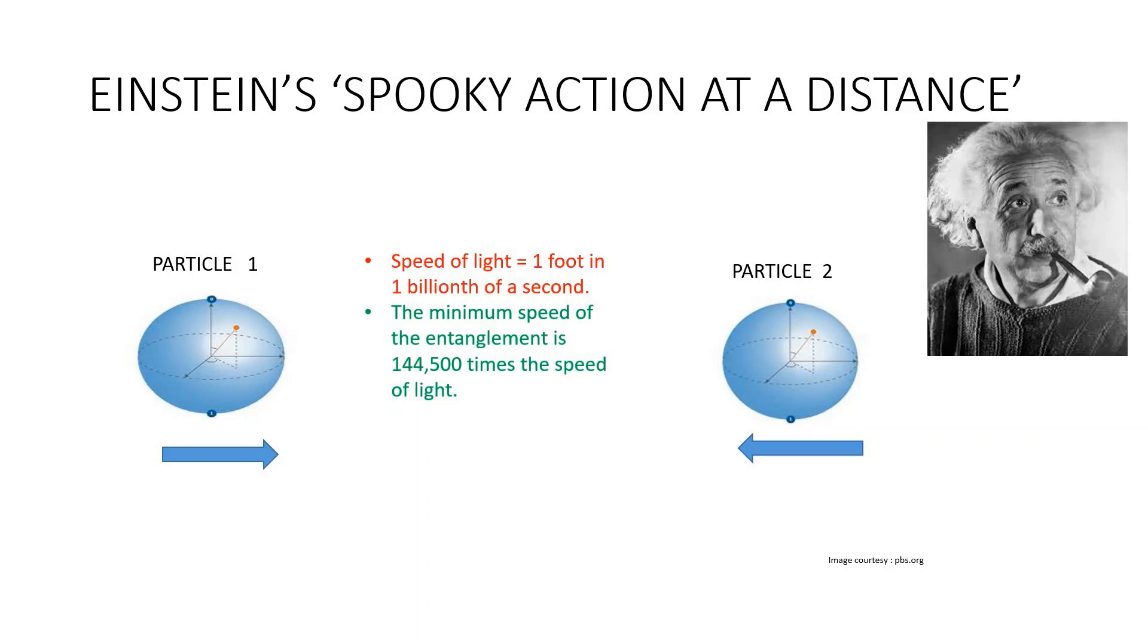You can separate them feet, miles or even huge distances and the two particles are connected by a single wave function and they will have separate spin. As you know, the quantum world is intrinsically probabilistic. We can't predict the outcome of a measurement before we make it.